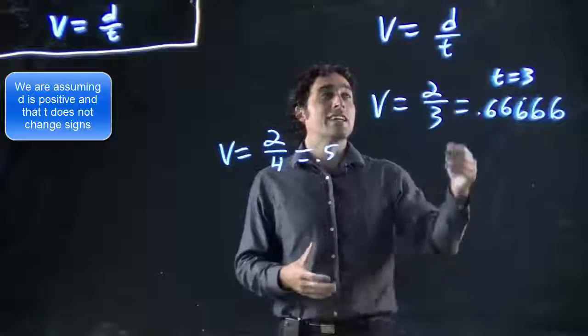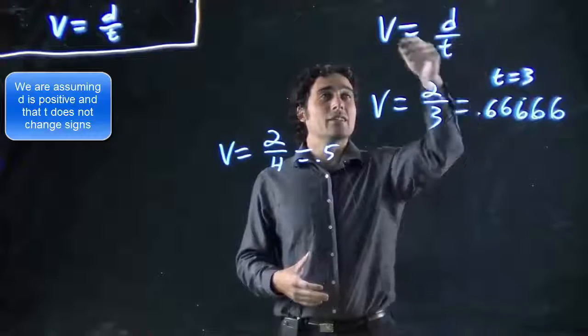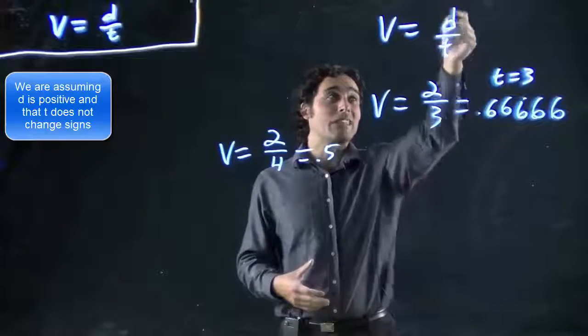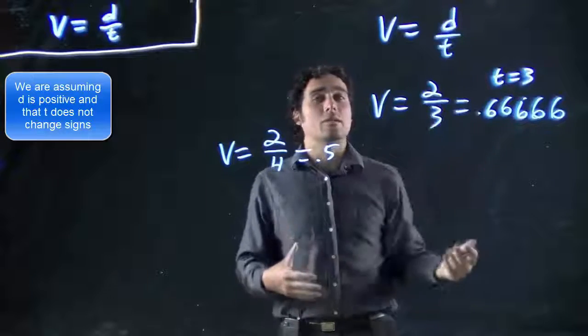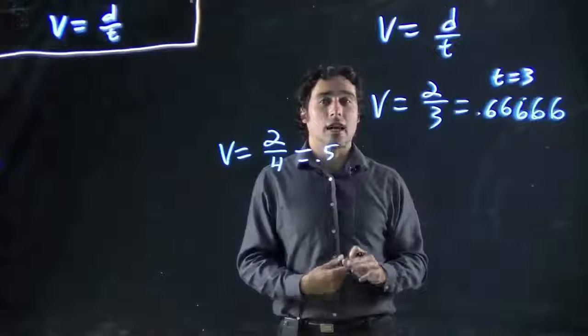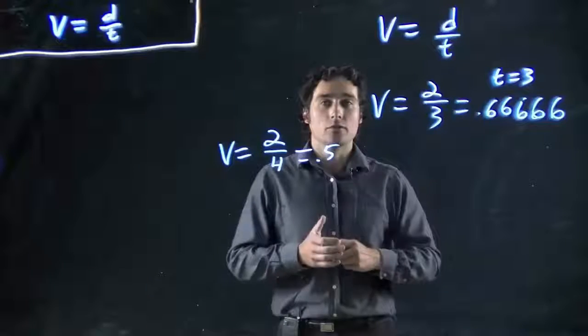That's the fancy word for it. It just means as t is getting bigger, v has got to get smaller as long as d is staying the same. This number up here is staying the same. We're dividing by a bigger and bigger number, so the result is going to get smaller and smaller. That's how we analyze these two variables.